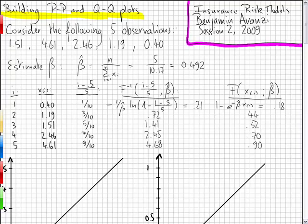Consider the following five observations. These observations have been simulated from an exponential distribution with the parameter 0.3. But assume you don't know that, and these are the five observations that you would like to fit. You assume also that you have chosen to fit an exponential distribution to these five observations. The first step is to estimate the parameter of your exponential distribution. If you work out the MLE, you'll find out that the MLE estimator of beta is n, the number of observations, over the sum of the observations. In our case here, it's 0.492.